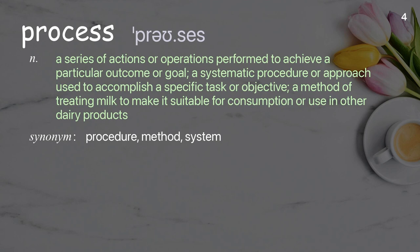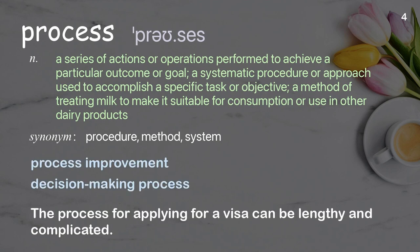Process. A series of actions or operations performed to achieve a particular outcome or goal. A systematic procedure or approach used to accomplish a specific task or objective. A method of treating milk to make it suitable for consumption or use in other dairy products. Examples: The process for applying for a visa can be lengthy and complicated.